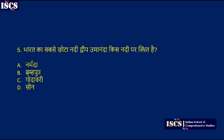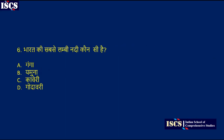Now look at question number five: India's smallest river island, Umananda, is situated on which river? Options are Narmada, Brahmaputra, Godavari, or the first zone. The right answer is Brahmaputra.